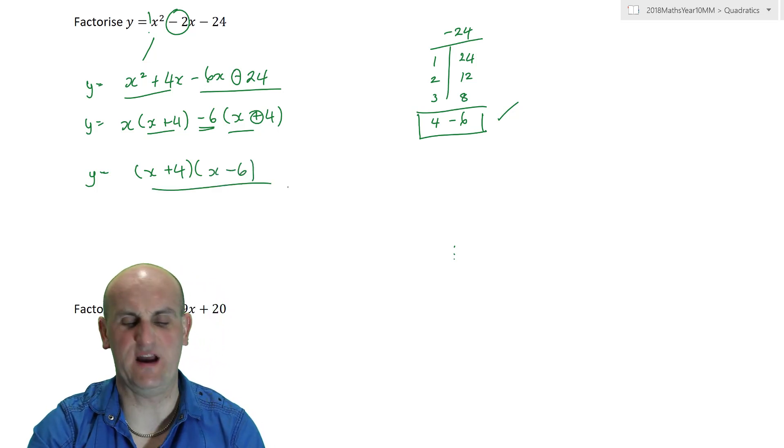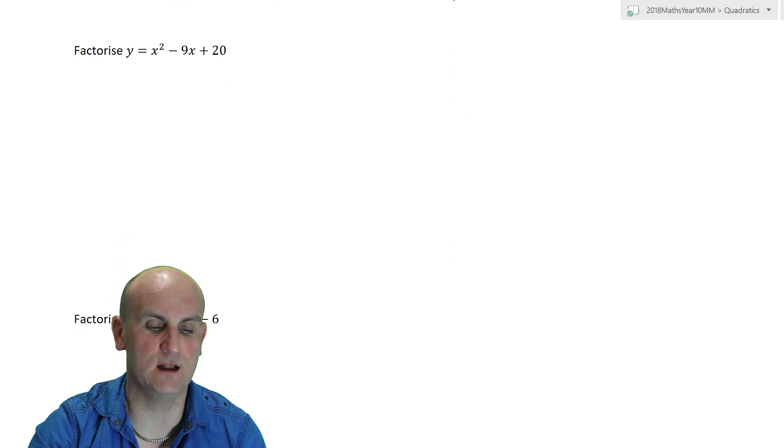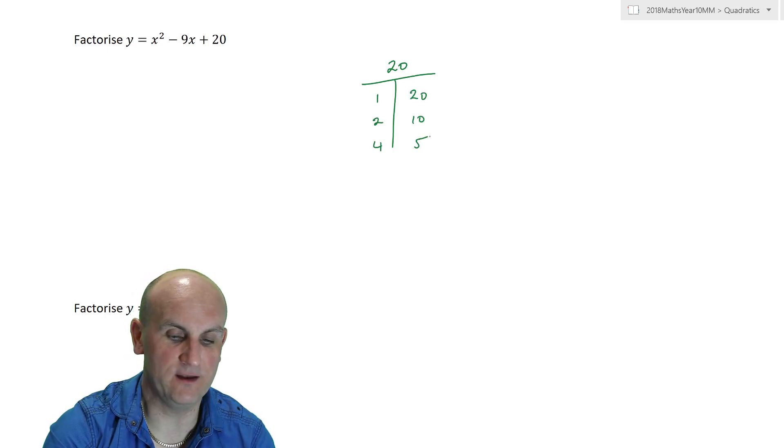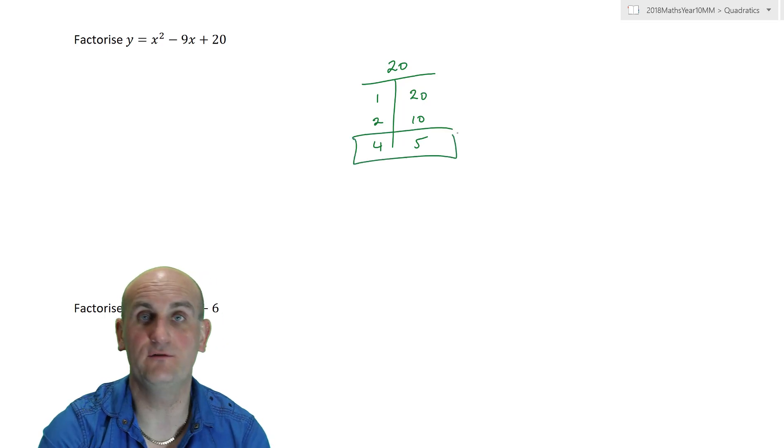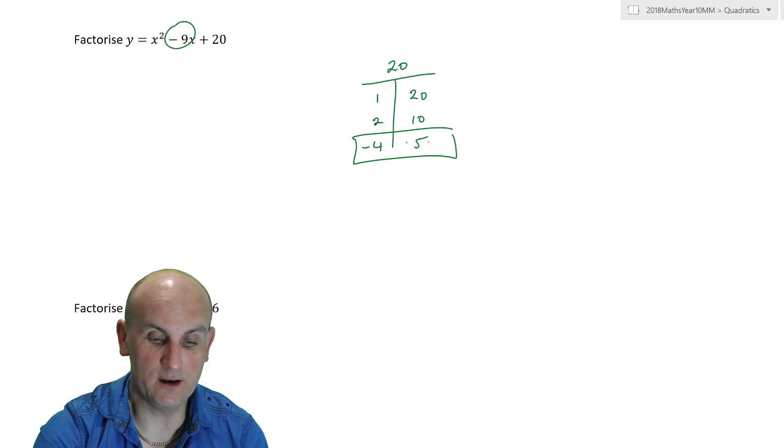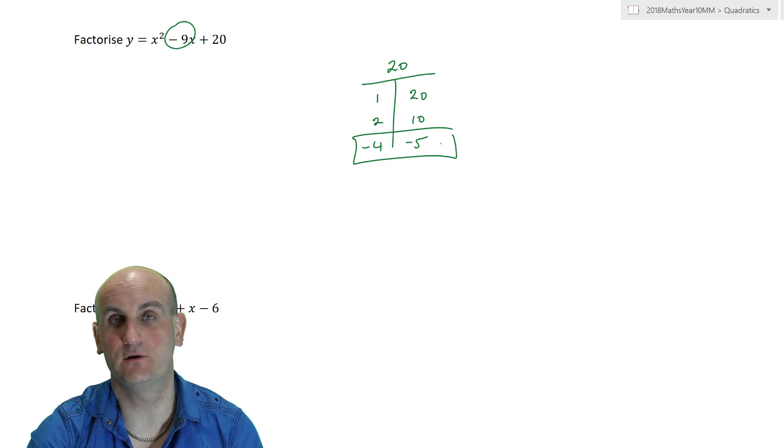And, again, beautifully factorised. One last example with slightly bigger numbers. What am I looking for? Plus 20. So, 20. I'm just going to write 20 as 1 and 20. 2 and 10. 3 doesn't work. 4 and 5. Why am I going to choose 4 and 5? Well, because I know that I need to get minus 9. 4 and 5 add together to give me 9. So, minus 4 and minus 5. Because it's going to be minus 9.